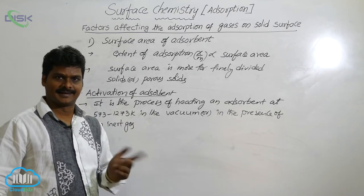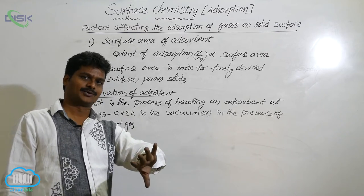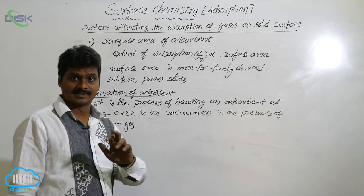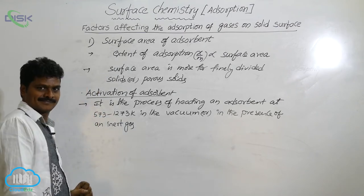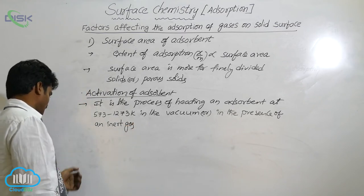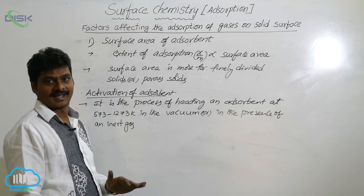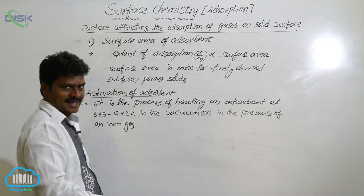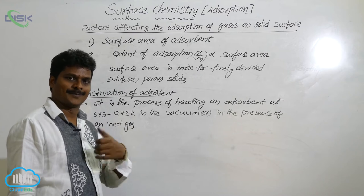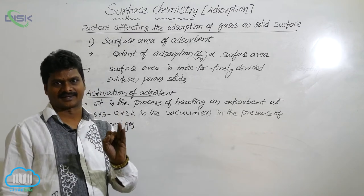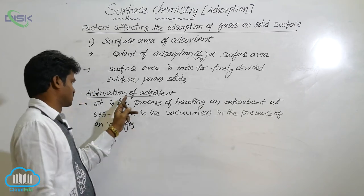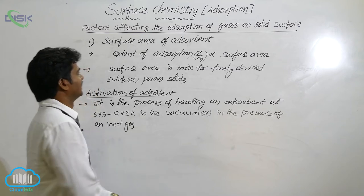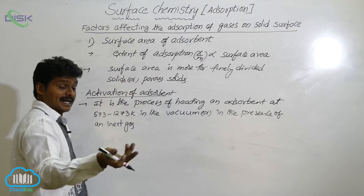The adsorbent which has undergone activation is called an activated adsorbent — for example, activated charcoal. So, to have more surface area, the substance must be either porous or in a finely divided state, and it should be subjected to activation. By activation, the surface area of the adsorbent increases. As a result, if surface area increases, the extent of adsorption increases.